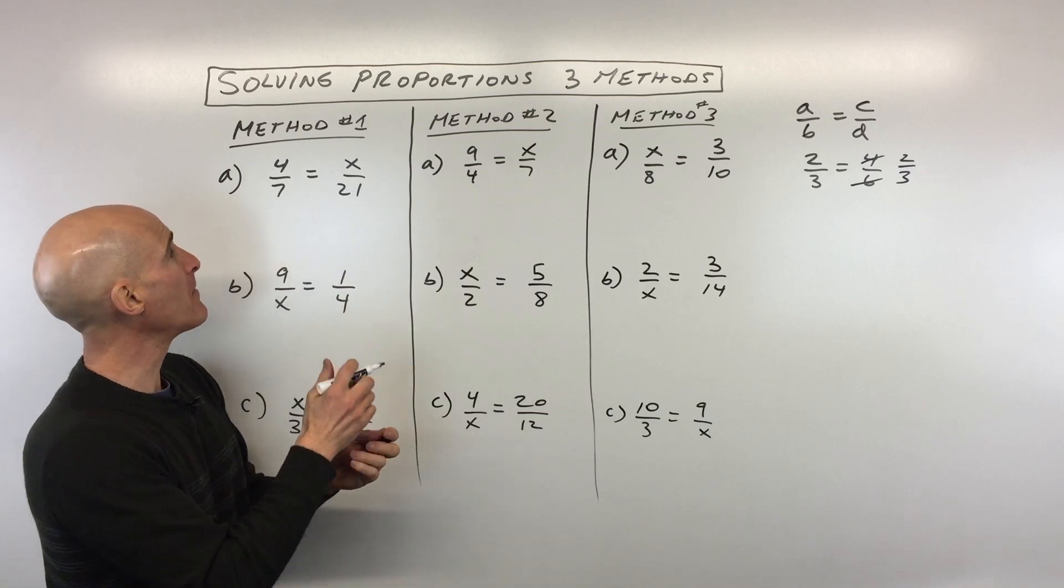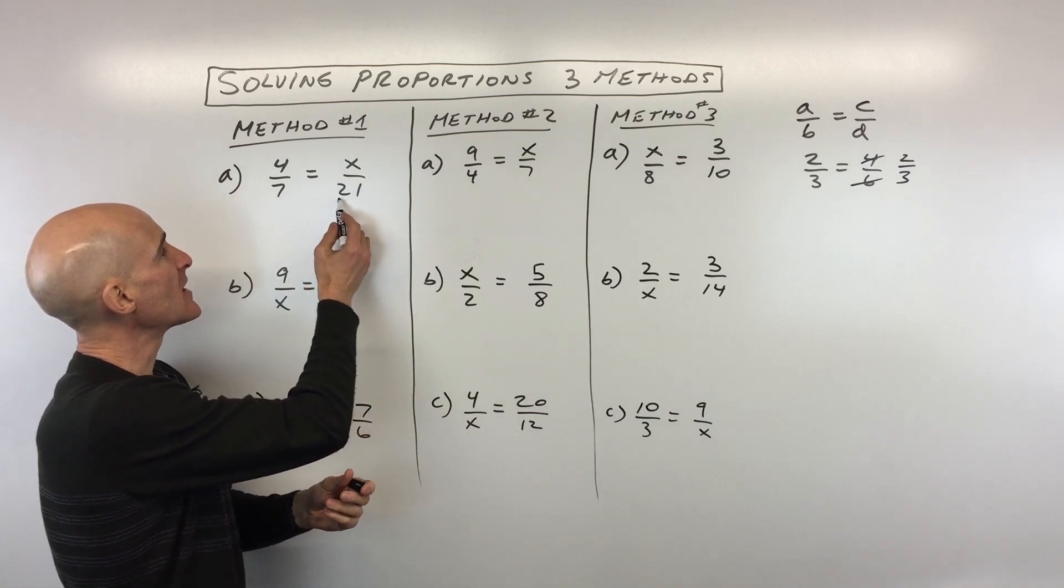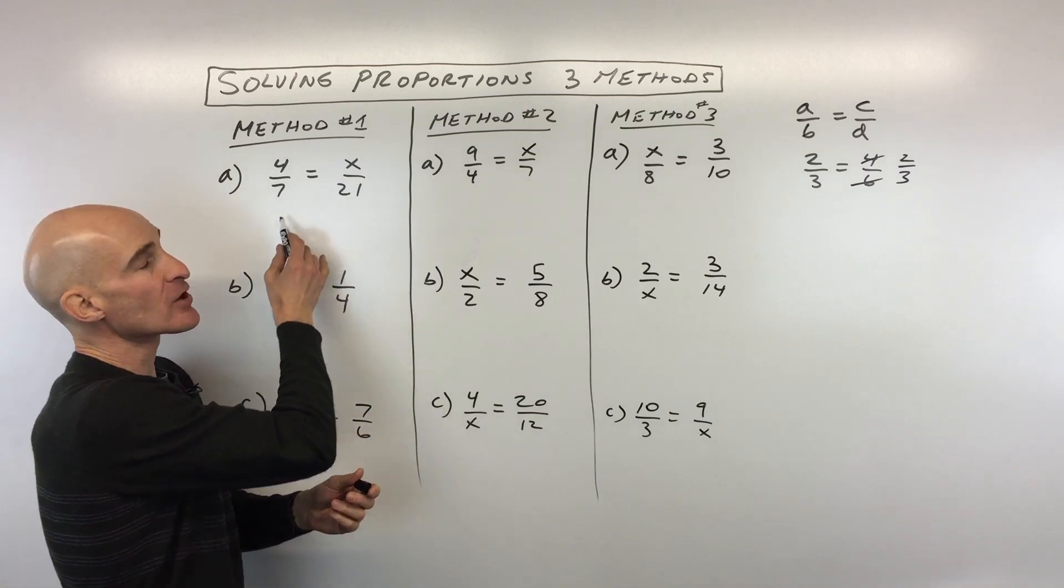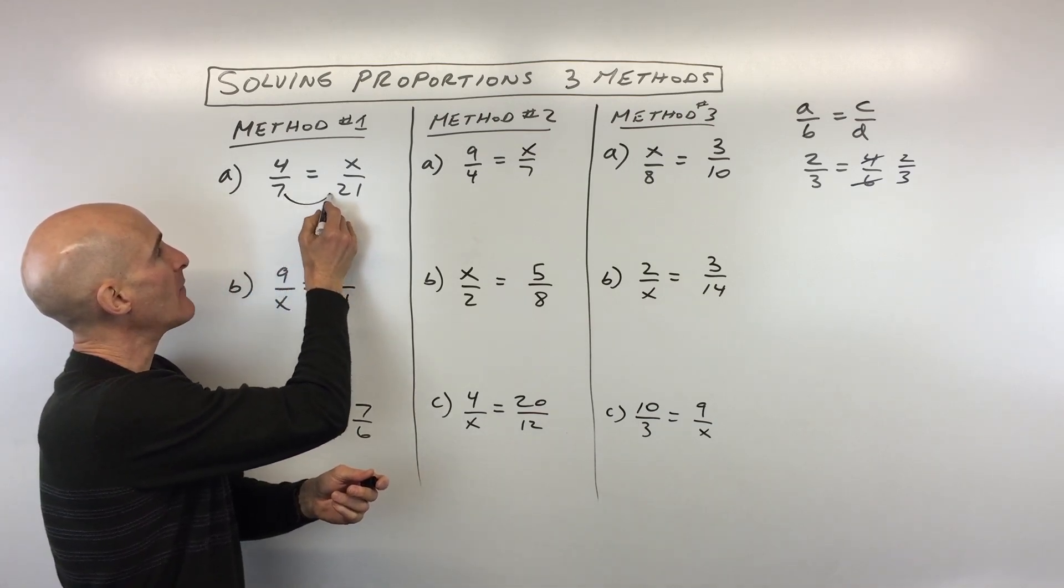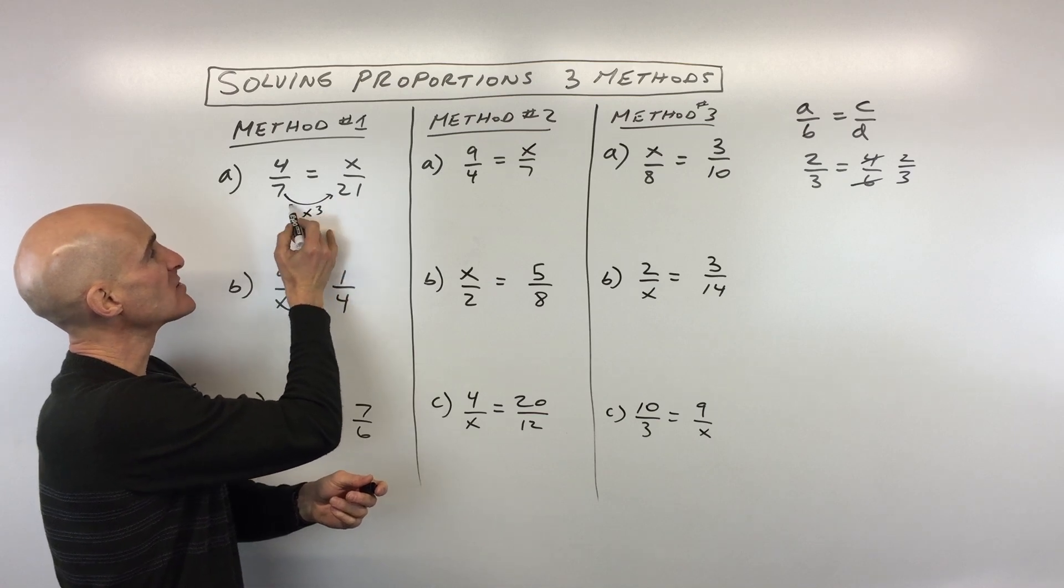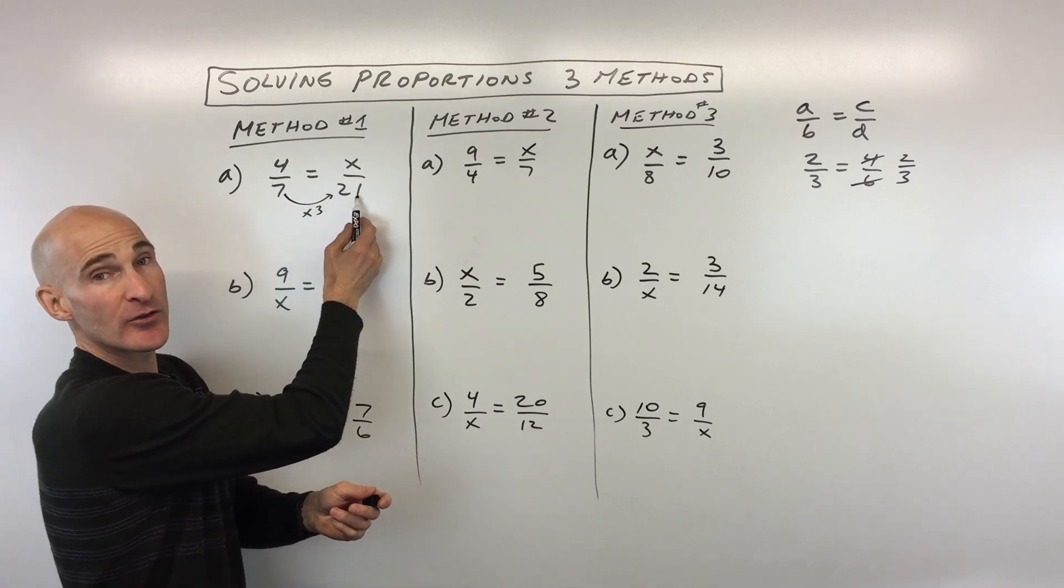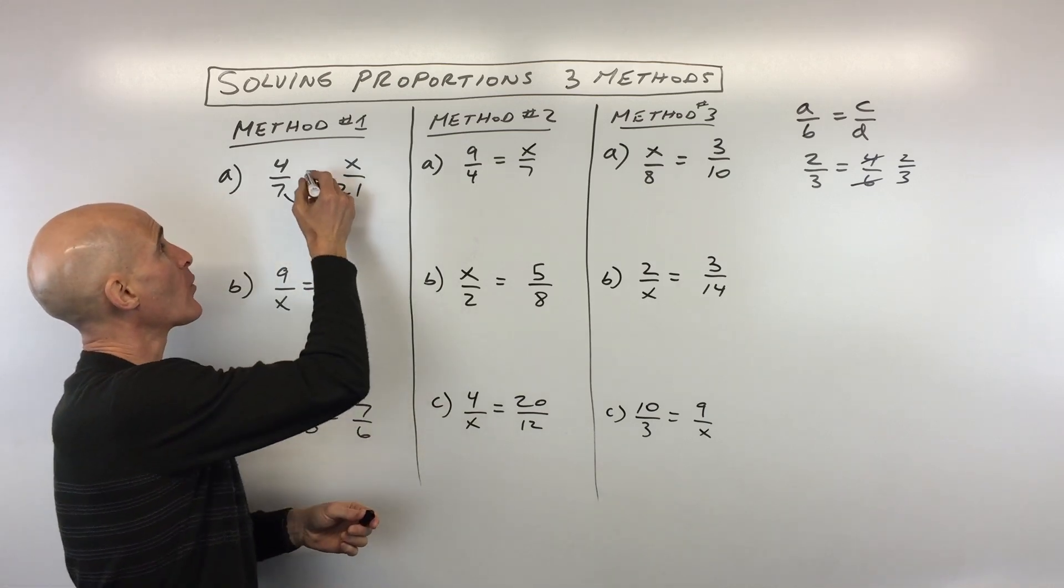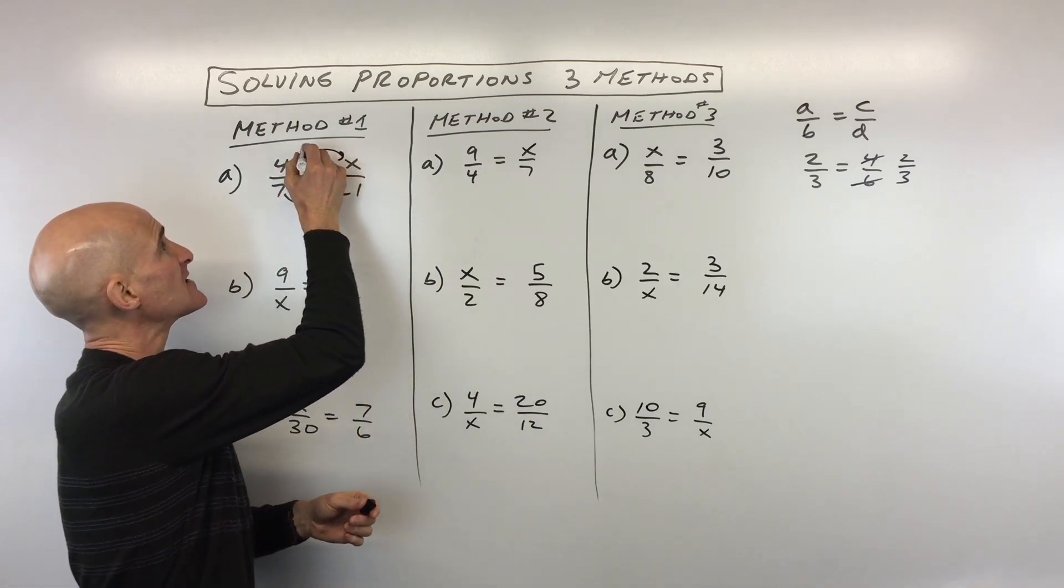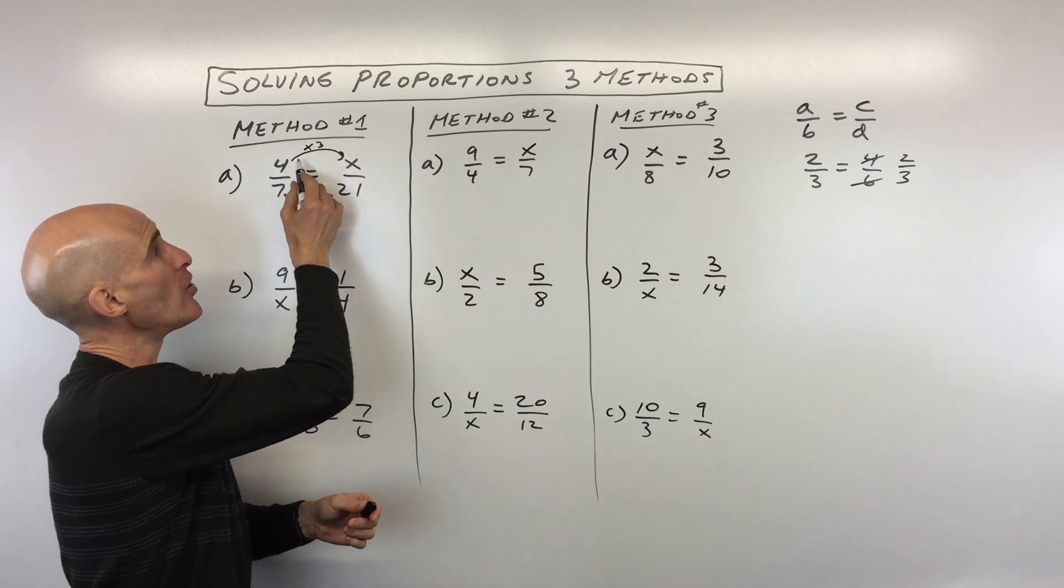So method number one, what we're going to do here is we're going to say, well, these fractions are equal, right? So I'm going to multiply this denominator, 7, by 3 so that it gives me this denominator over here on the right, 21. But when you multiply the denominator by a quantity, you have to multiply the numerator by that same quantity. So I'm going to multiply the top also by 3.